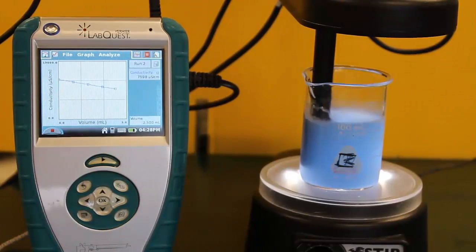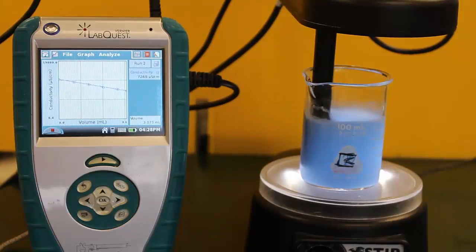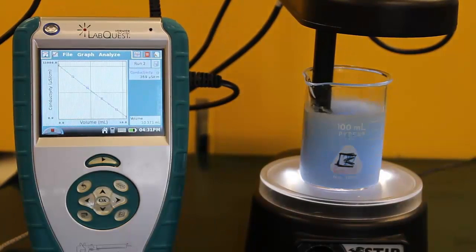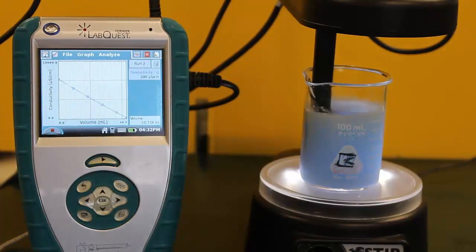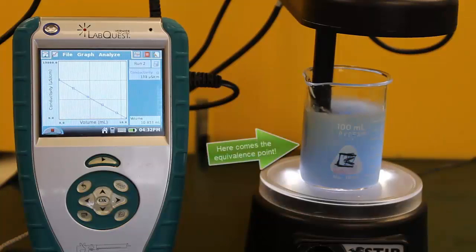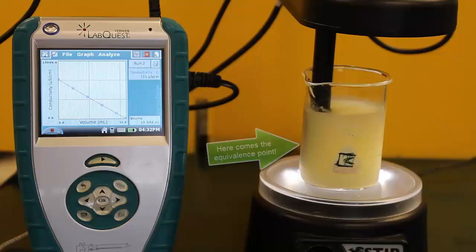Notice the rapidly declining conductivity of the solution as we slow down the video near equivalence. Watch closely for the color change - there's the equivalence point as the bromthymol blue indicator turns yellow.